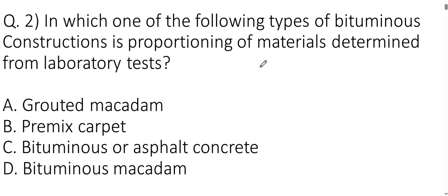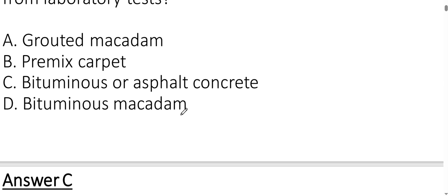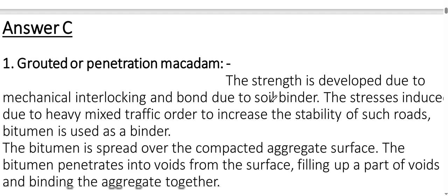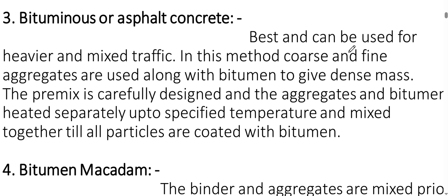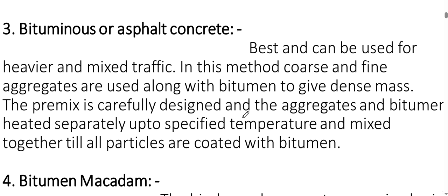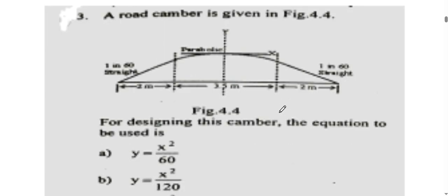Next question: In which type of bituminous construction is proportioning of materials determined from the laboratory? The answer is option C — bituminous or asphalt concrete. In this method, coarse and fine aggregates are used along with bitumen to give a dense mass. The premix is carefully designed, with aggregate and bitumen heated separately to a specified temperature and mixed until all particles are coated with bitumen.